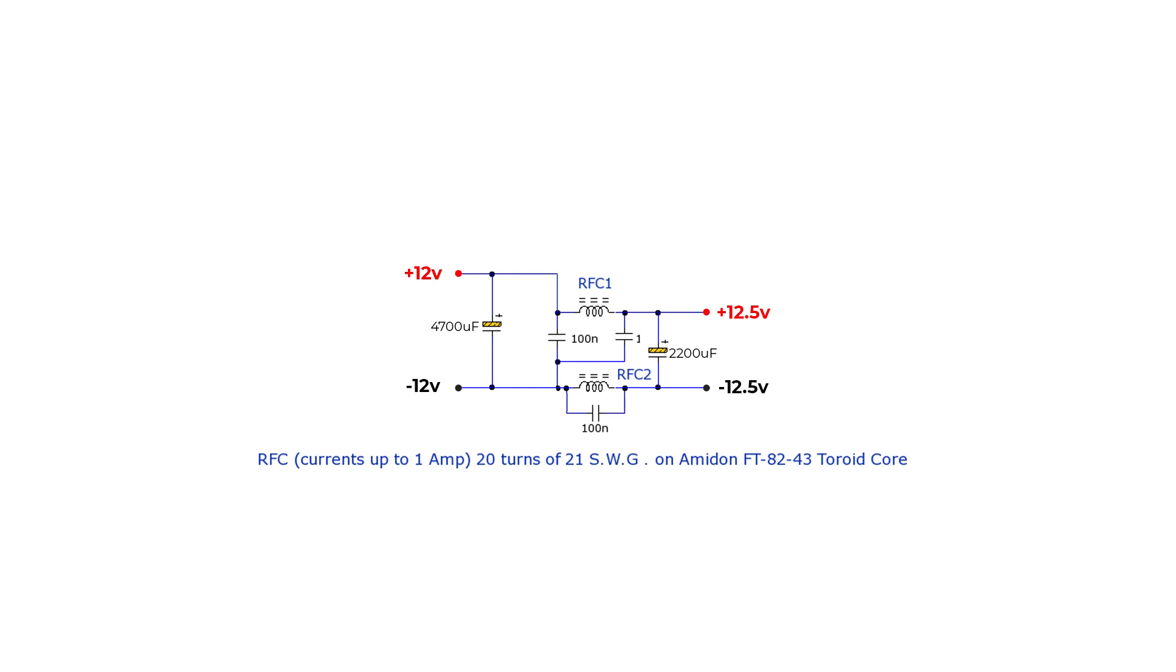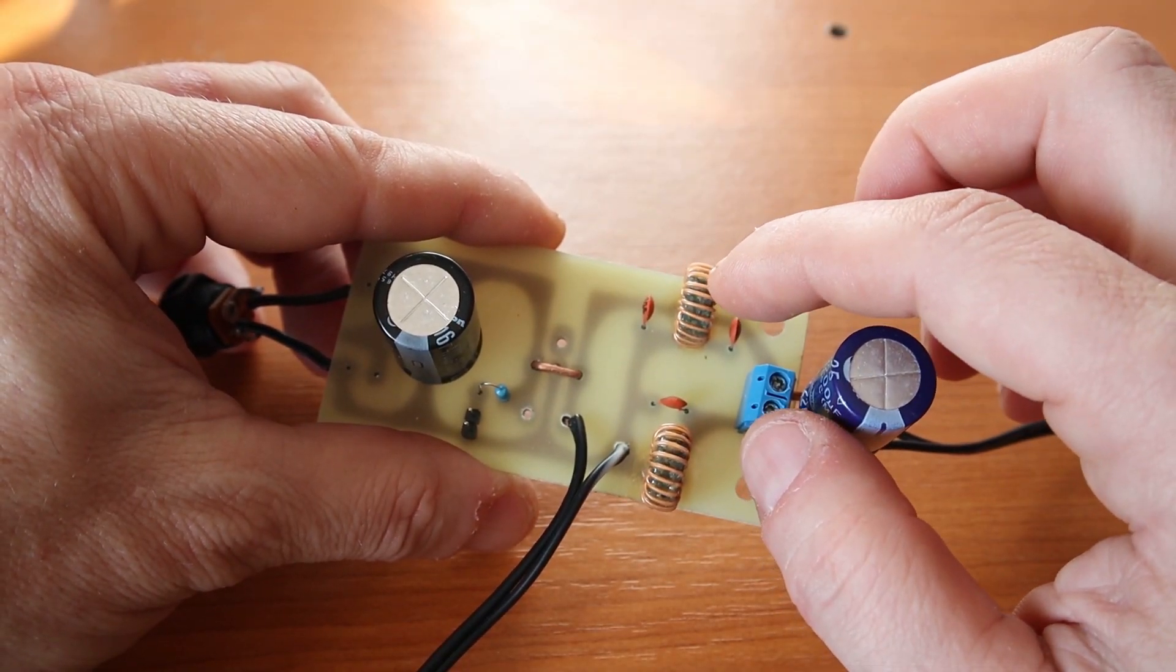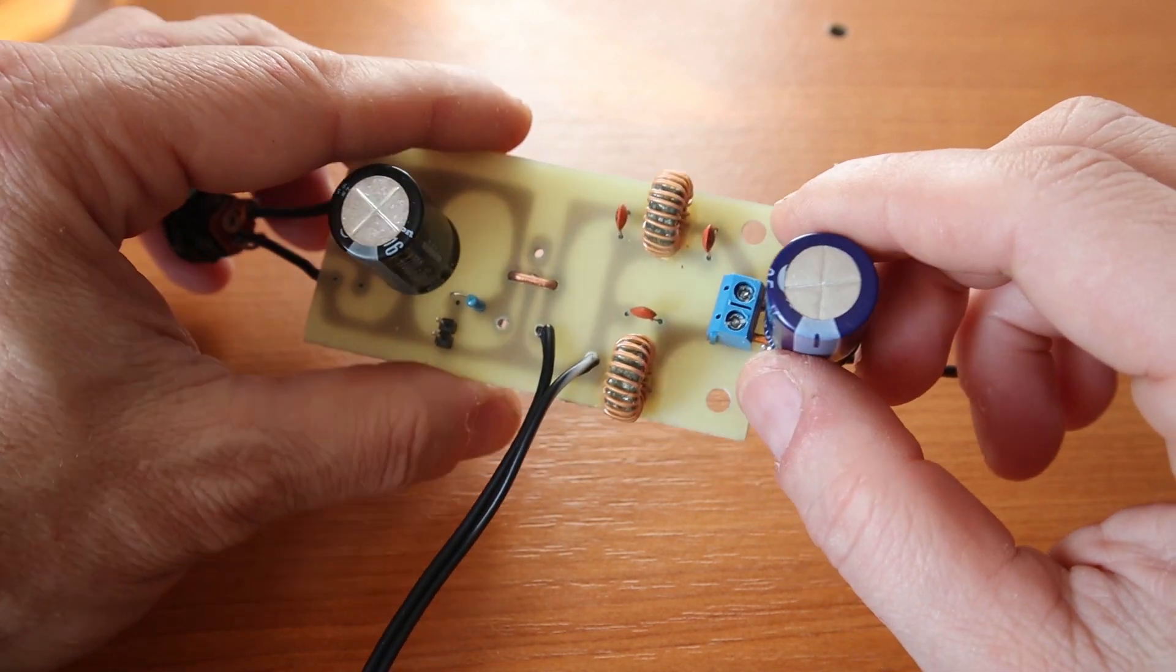As you can see in the schematic, I have the first capacitor, the first filtering capacitor is 4700 microfarads. Then I have three ceramic capacitors, I believe they're 100 nanofarads each, and two inductors. Now depending on the power that you want to go through the filter, you might want to increase the size of the toroid. I used FT 50-43 and the wire size was 0.45 millimeters.